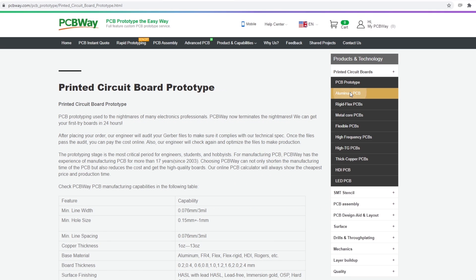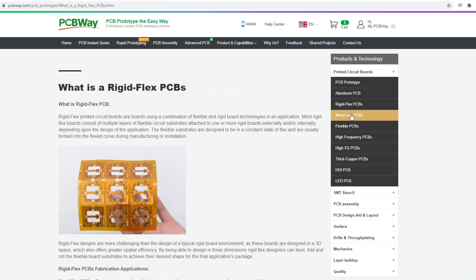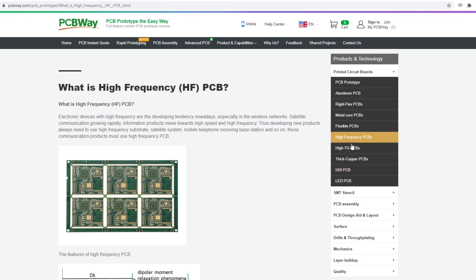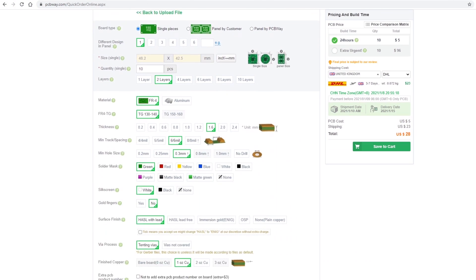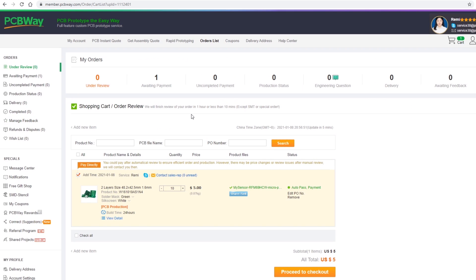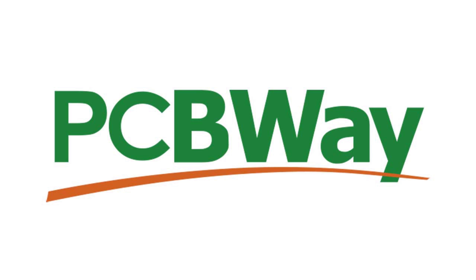PCBWay manufacture all sorts of boards including standard fiberglass PCBs but also aluminum PCBs, flexible PCBs and rigid flex PCBs which are part rigid and part flexible. Prices start at $5 for 10 standard PCBs and $30 for 10 PCBs with assembly, but new customers can get $5 credit so you can get 10 PCBs for free the first time you order. Find out more now at pcbway.com.